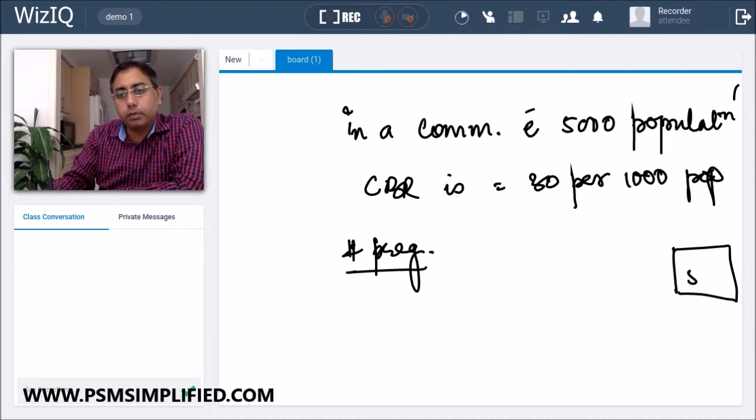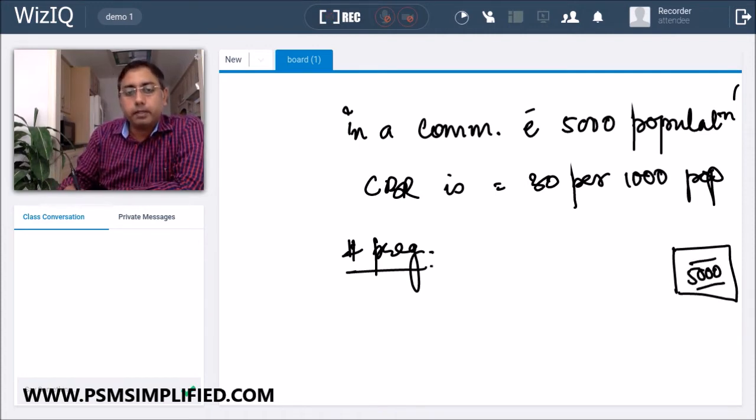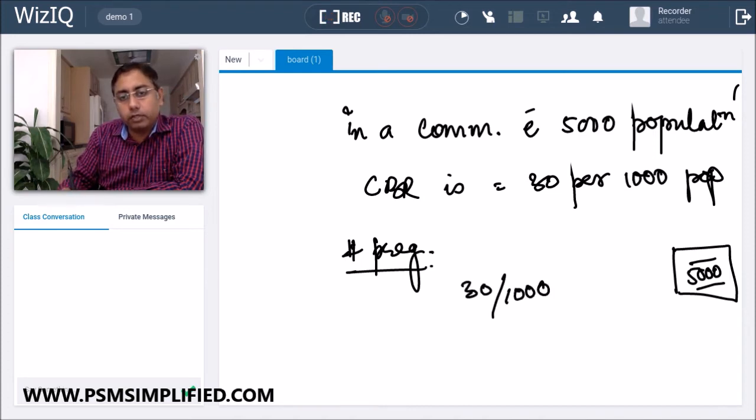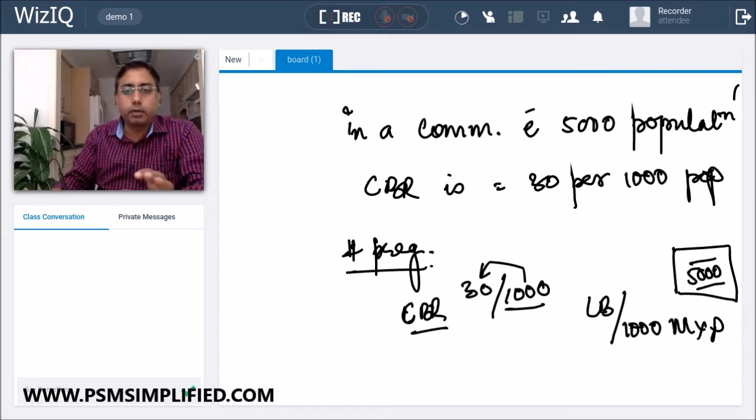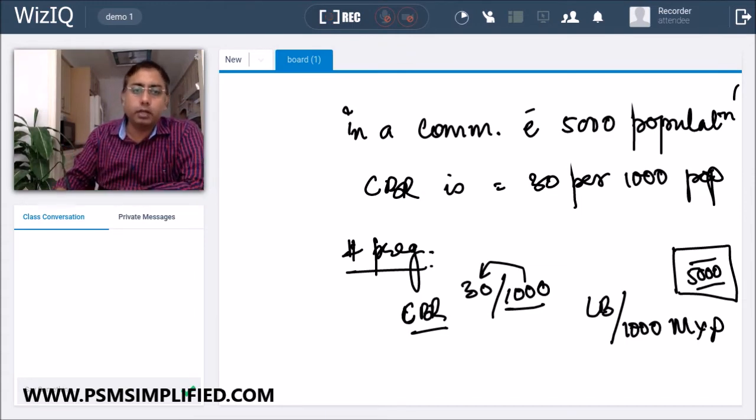This is the whole community of 5000 population. We want to find out how many pregnancies are there. So the crude birth rate given to you is 30 per thousand. If for 1000 people you have 30 live births, crude birth rate is the number of live births per 1000 mid-year population. So for 1000 you will have 30, and for 5000 how much will we have?